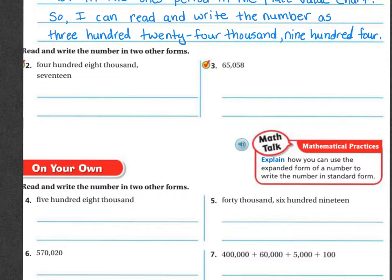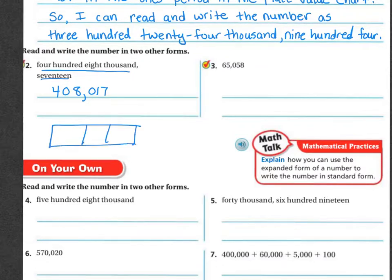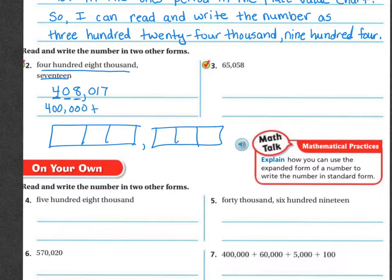They want us to write the number in two other forms. This first one is already in word form: four hundred and eight thousand, seventeen. If you need to, use the place value chart — do your thousands period, your comma, and your ones period. For expanded form: this is worth four hundred thousand, plus eight thousand, plus ten, plus seven — the tens place and the ones place.